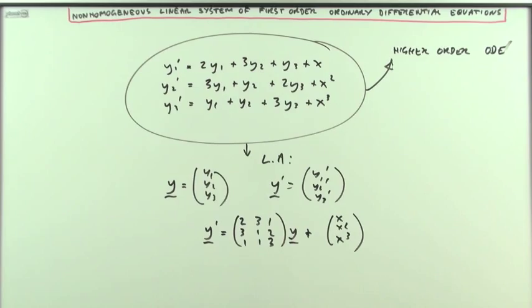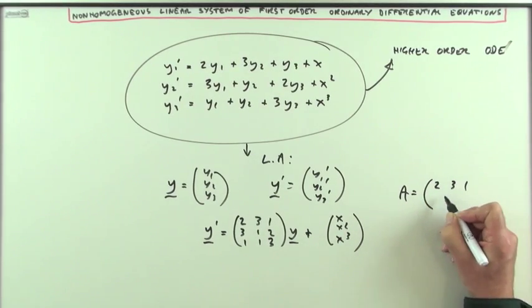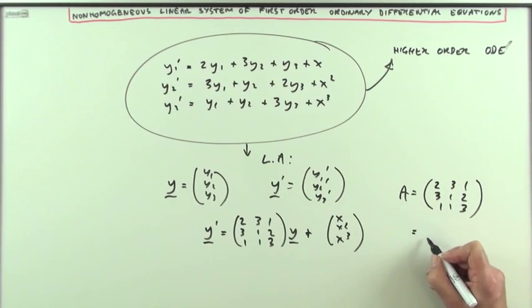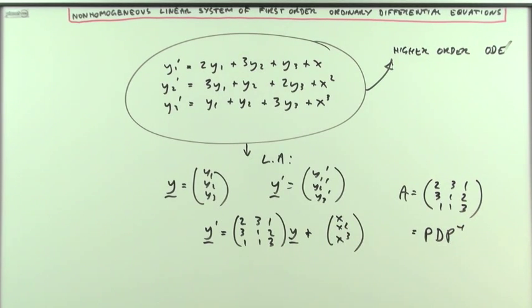The first step would be: take that matrix, call it matrix A—matrix A would be 2, 3, 1, 3, 1, 2, 1, 1, 3—and diagonalize it into this combination where D, the diagonal matrix, will be the matrix of the eigenvalues and P will be the matrix of the eigenvectors. Then I could rewrite this as Y dashed would be P D inverse of P Y plus F.